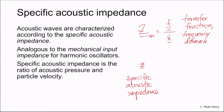Specific acoustic impedance is the ratio of the complex acoustic pressure P-underline to the complex particle velocity U-underline. This is also a transfer function that exists in the frequency domain. The units are different from mechanical input impedance: whereas mechanical input impedance has units of Newton-seconds per meter, specific acoustic impedance has units of Newton-seconds per meter cubed.